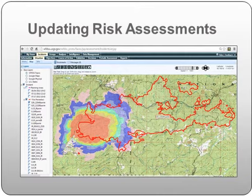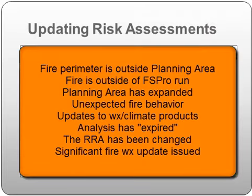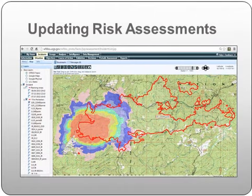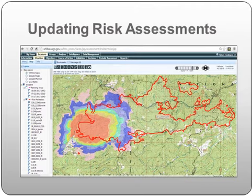Indications that a new risk assessment may be needed include: the fire has spread outside the planning area or outside the contours of the FS Pro runs; the planning area has been expanded; unexpected fire behavior is observed on the incident; more recent versions of products are available with updated information; the analysis period for the fire behavior outputs has expired; elements of the relative risk assessment have been reassessed and changed; or a significant change to the fire weather forecast has been issued. Important limitations to include are the expected expiration dates of the assessment and specific conditions that indicate the fire behavior products require re-evaluation.